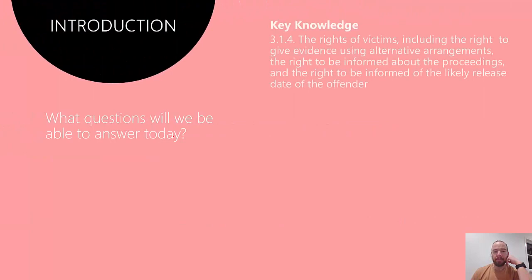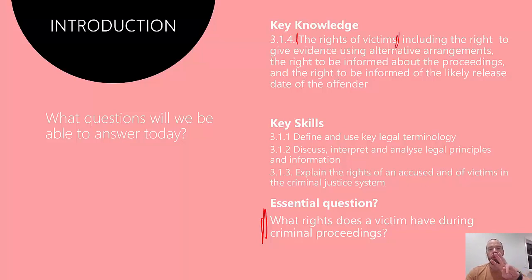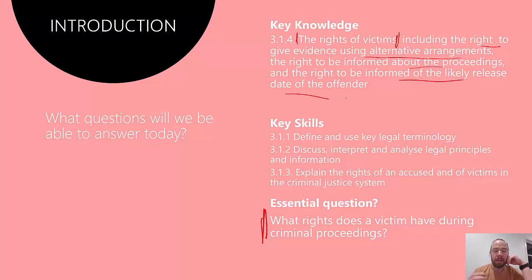So, 3.1.4 today. Our essential question is going to be: what rights does a victim have during criminal proceedings? Just like the rights of the accused, we are broadly told that we need to know the rights of victims, but then given three specific rights to learn about: the right to give evidence using alternative arrangements, the right to be informed about the proceedings, and the right to be informed of the likely release date of the offender. Because these three are explicitly in the study design, there's nothing to say that you couldn't be asked a specific question about them on the exam.